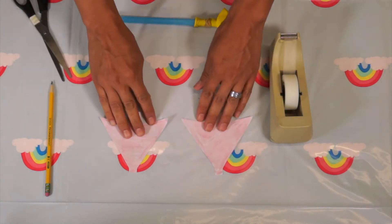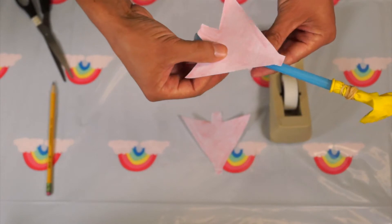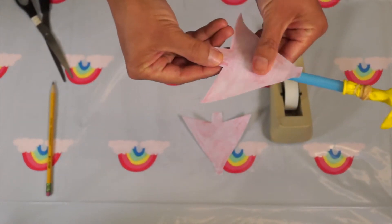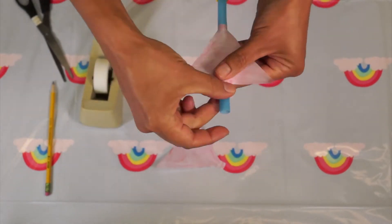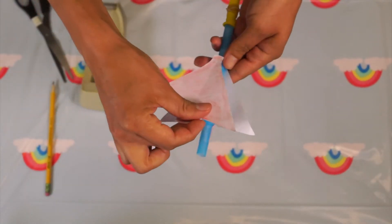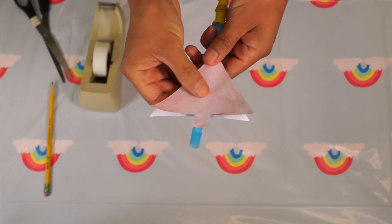And then now, what we're going to do is tape the fins to the straw. Wherever you tape your first fin, you're just going to do the same thing on the other side of the straw.